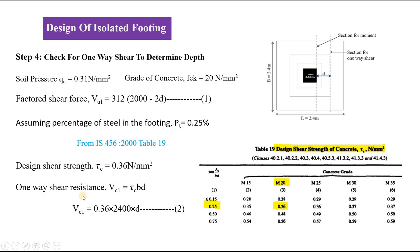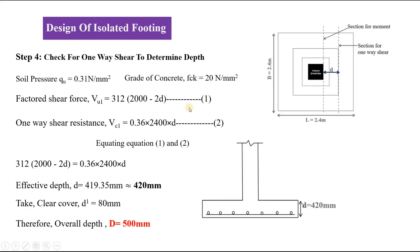To find the one-way shear resistance, we need the design shear strength. We assume the percentage of steel Pt = 0.25%. From Table 19 of IS 456, for 0.25% steel, the design shear strength τc = 0.36 N/mm². The one-way shear resistance Vc1 = τc × B × D. Substituting values gives Equation 2. Equating both equations, the effective depth D is approximately 420 mm.